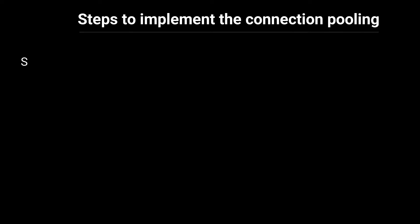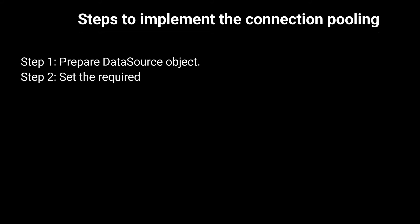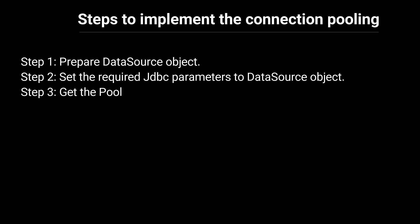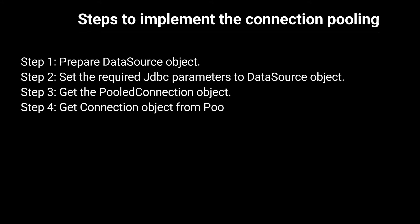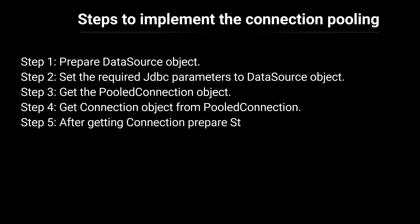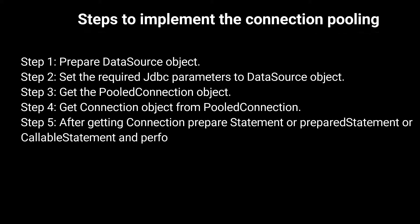To implement connection pooling in a JDBC application we follow these steps: Step 1 — prepare a DataSource object. Step 2 — set the required JDBC parameters to the DataSource object. Step 3 — get the PooledConnection object. Step 4 — get the Connection object from the PooledConnection. Step 5 — after getting the connection, prepare a Statement, PreparedStatement, or CallableStatement and perform the respective database operations.